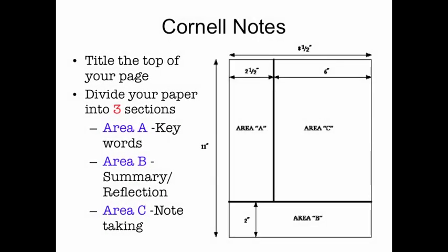As always, you should have your notebook open to the correct page. At the top you should have the title of the notes. You should also draw a line about 2½ inches from the left-hand side straight down. This will divide your notebook paper into two sections. Area A will be the area you put the key words in. Area C is where you'll take most of your notes, draw your little diagrams, bullet notes.